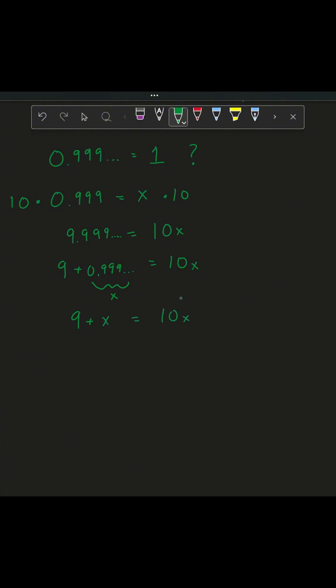So now let's solve for x, whatever that's equal to. That's equivalent to 0.99 repeating. And so we'll just subtract x from both sides to get 9 equals 9x. And then we'll divide by 9 to get x equals 1.